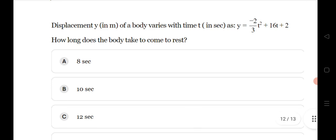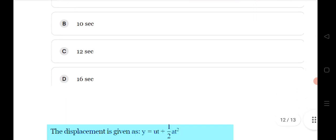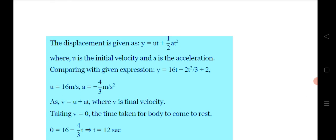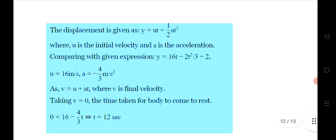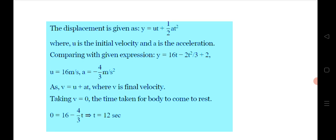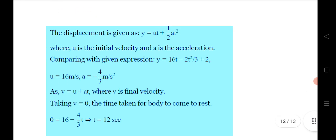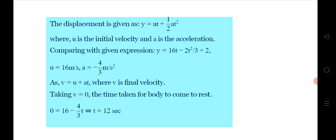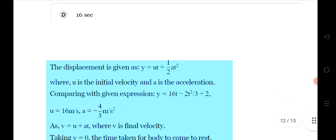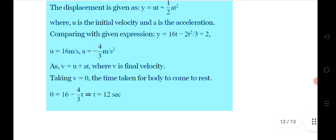Nineteenth question: a displacement equation is given — find how long the ball takes to come to rest. Compare the given equation with the standard form s = ut + ½at² to identify u = 16 and a = −4/3. Using v = u + at and setting v = 0, substitute u and a to find the time when the ball comes to rest.